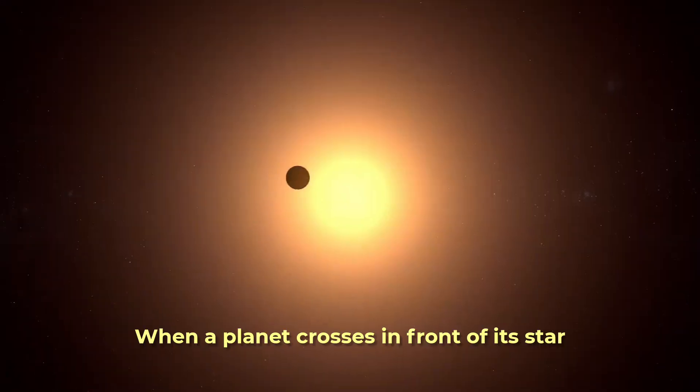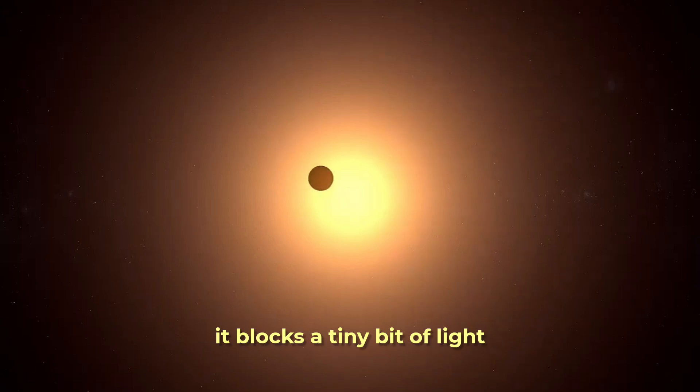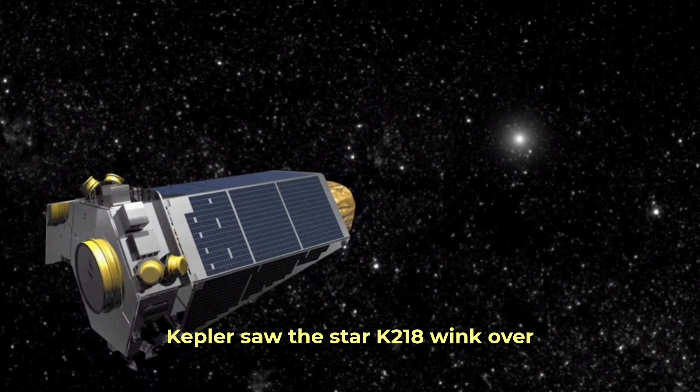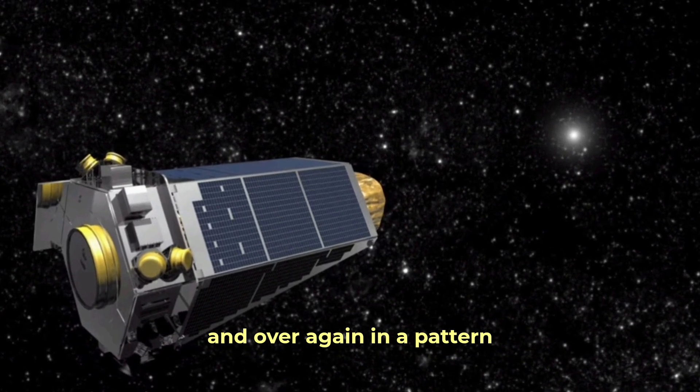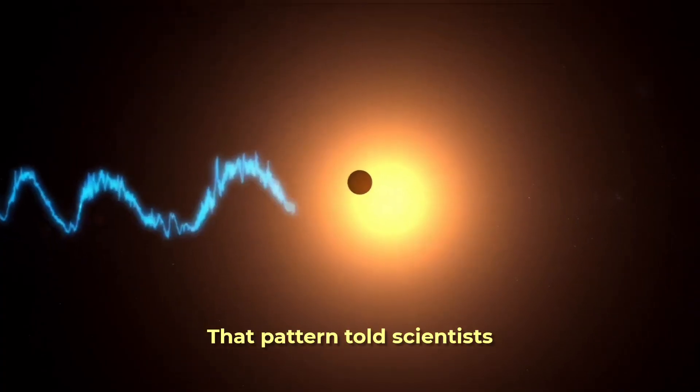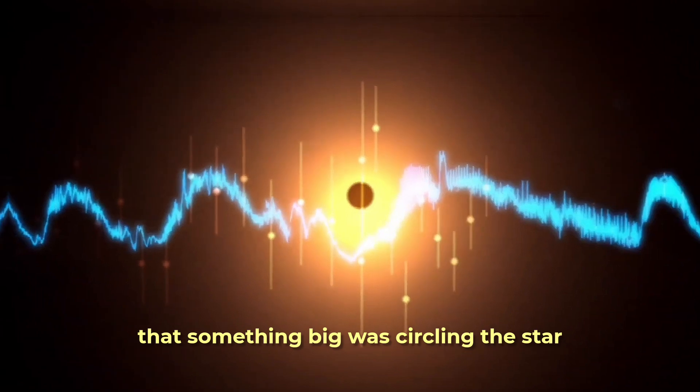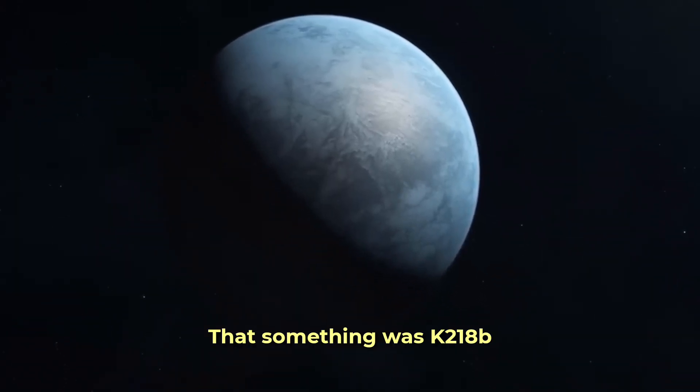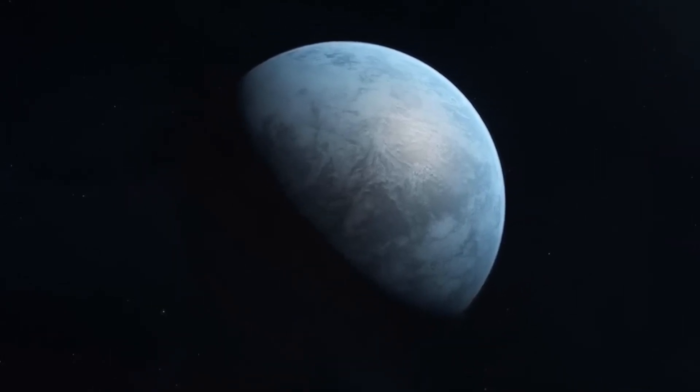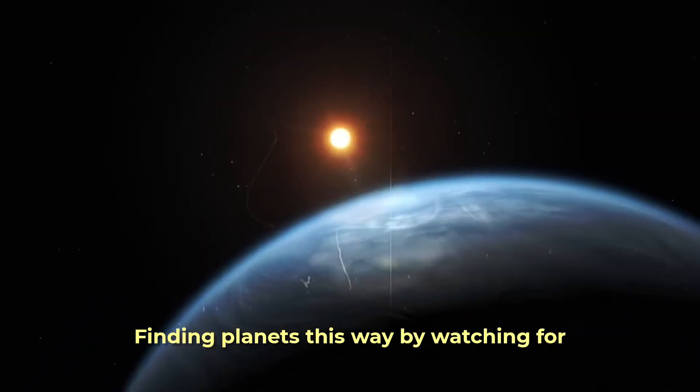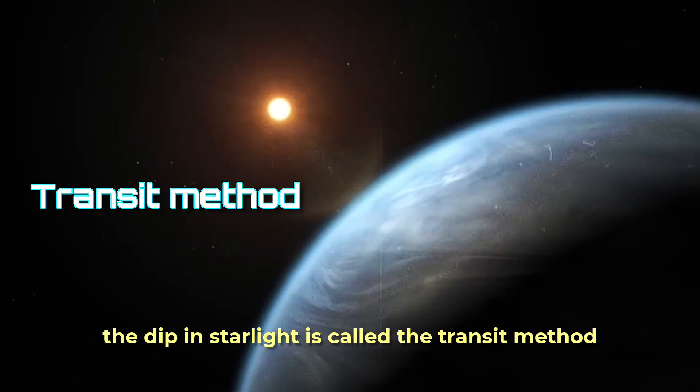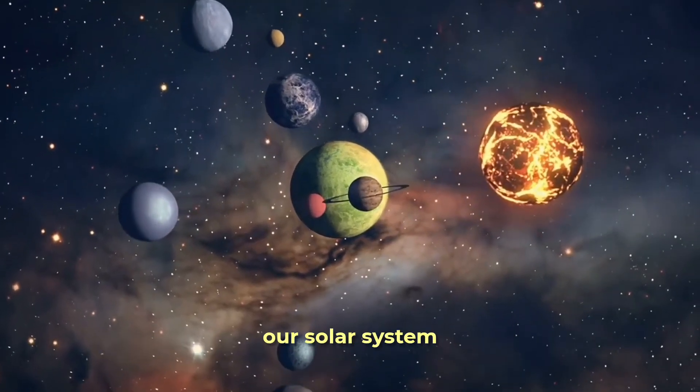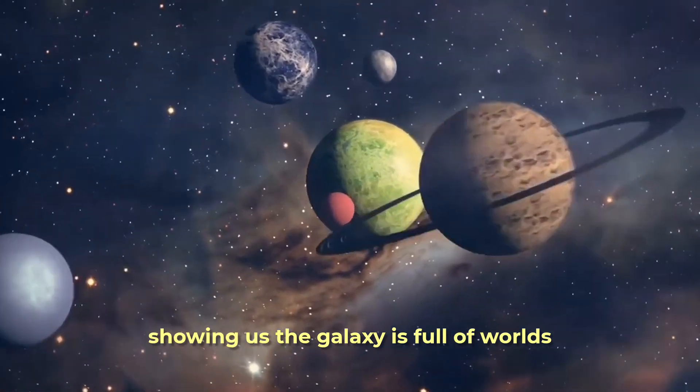When a planet crosses in front of its star, it blocks a tiny bit of light, like a mini eclipse. Kepler saw the star K2-18 wink over and over again in a pattern. That pattern told scientists that something big was circling the star out there in the dark. That something was K2-18b. Finding planets this way by watching for the dip in starlight is called the transit method. It's how we've found thousands of planets outside our solar system, showing us the galaxy is full of worlds.